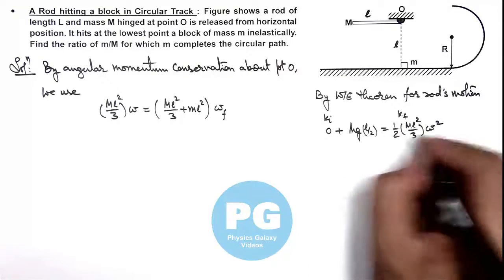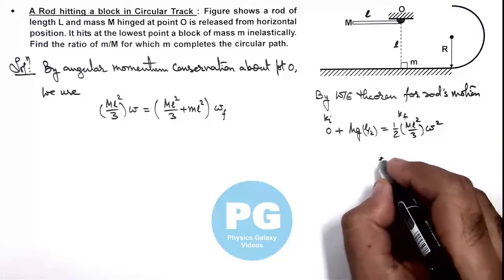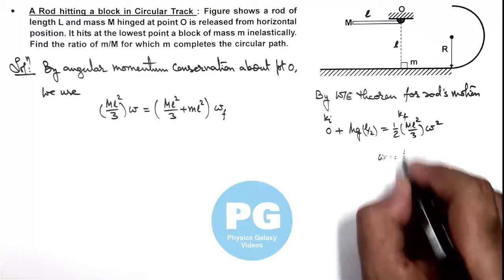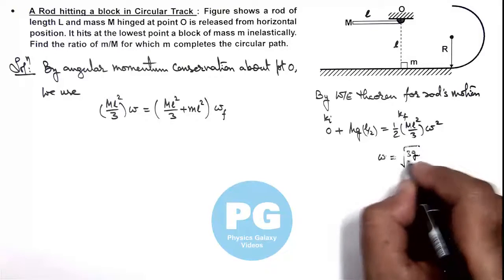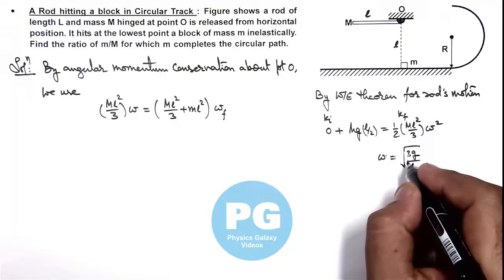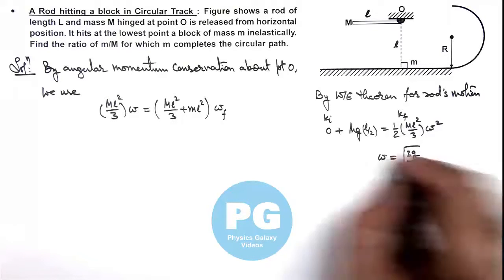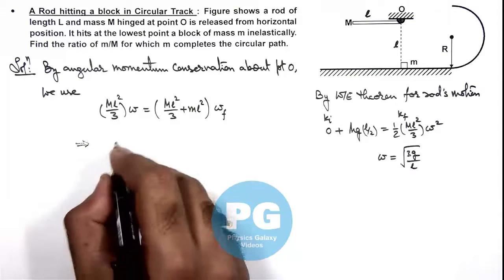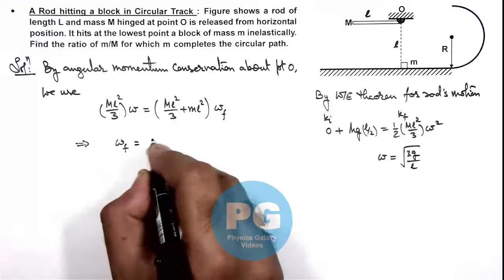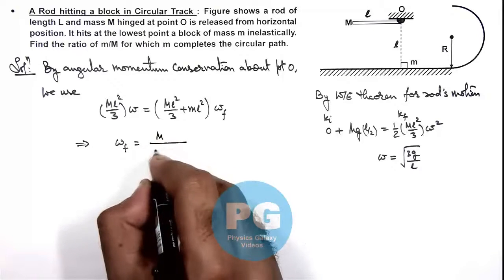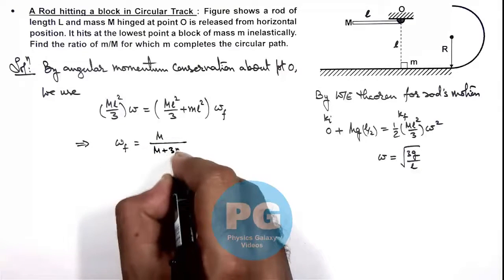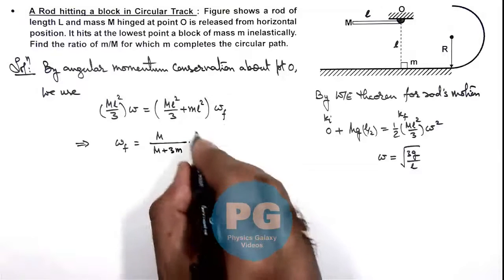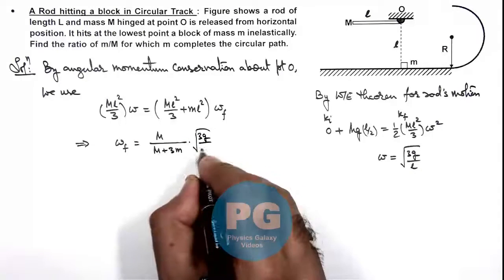Now in this situation, if we simplify, the value of omega we'll be getting is root of 3g by L. We can substitute the value of omega, and on simplifying this gives us the value of omega final, which is M by M plus 3m multiplied by omega, which is root of 3g by L.